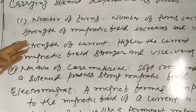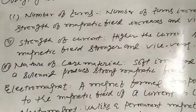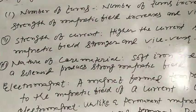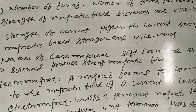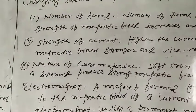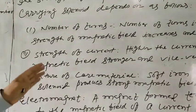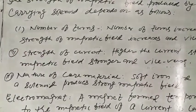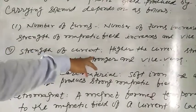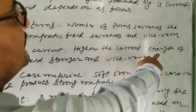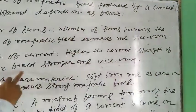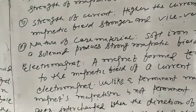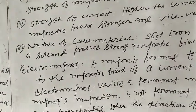Second, the strength of current. There is a current supplied in the solenoid. Higher the current strength, the magnetic field is stronger. Lower the current strength, the magnetic field is weaker.